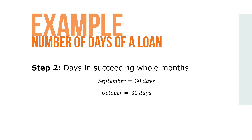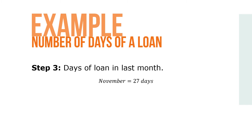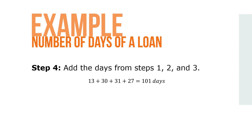Step two: calculate the days in the succeeding whole months. September has 30 and October has 31. Then calculate the days in the last month — November has 27 days. Add the days from steps one, two, and three: 13 plus 30 plus 31 plus 27 equals 101 days.